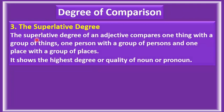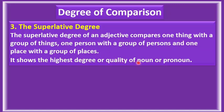The superlative degree of an adjective compares one thing with a group of things, one person with a group of persons, or one place with a group of places. It shows the highest degree or quality of a noun or pronoun.